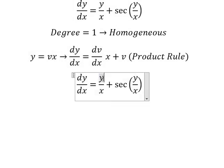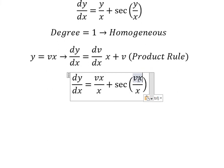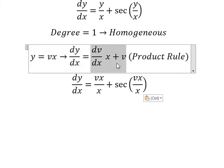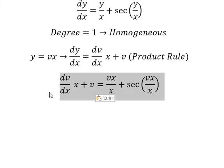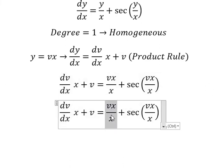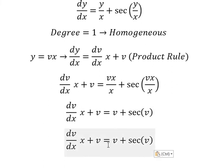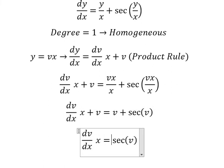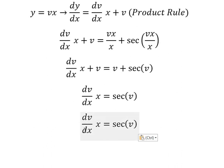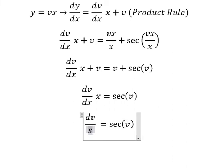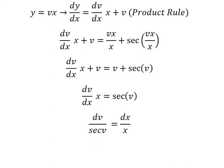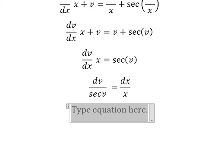Now I substitute dy over dx with the expression we found. We have v terms on both sides, so we simplify — the v's cancel. Then we separate variables: dx over x goes to the right side, and the expression in v goes to the left side. Next, I will integrate both sides.